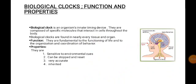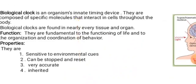Now, what are biological clocks? A biological clock is a natural timing device of an organism, composed of different types of specific molecules made up of proteins. Biological clocks are found in almost every tissue and organ. The function of a biological clock is to help in the organization and coordination of our behavior. Biological clocks are sensitive to environmental cues.